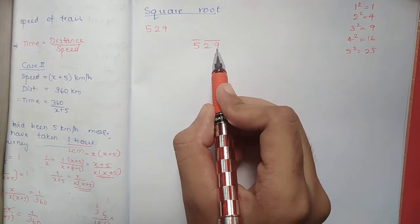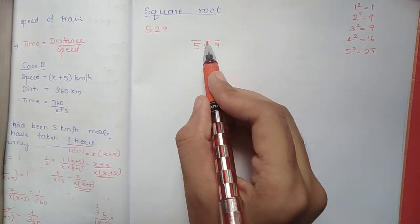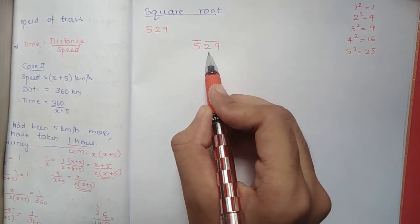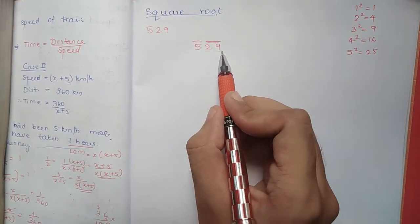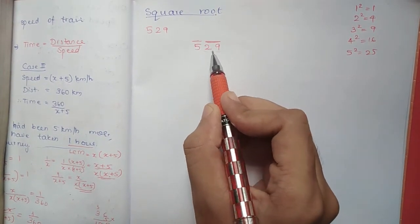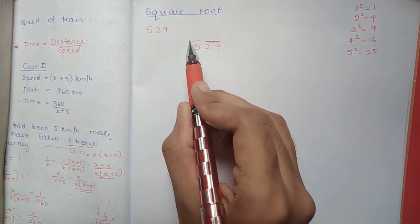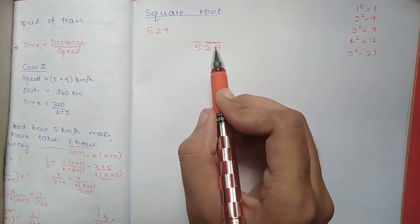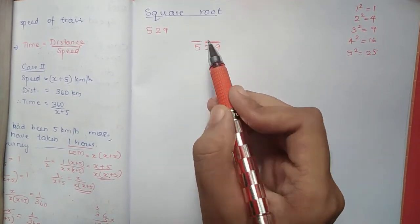We are going to show you the square root of 529. First, take 2 numbers from the back. When you have two numbers, you can separate the remaining number.